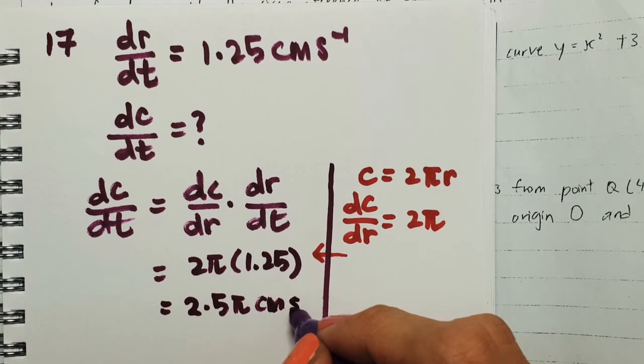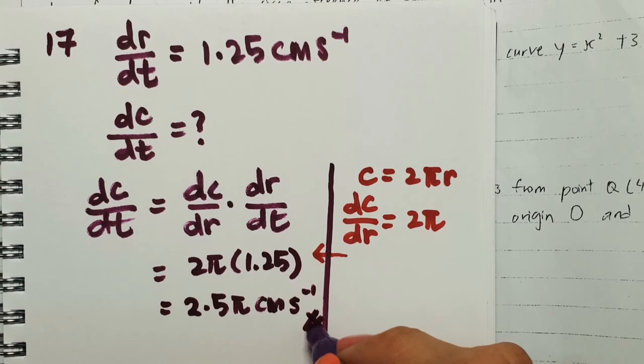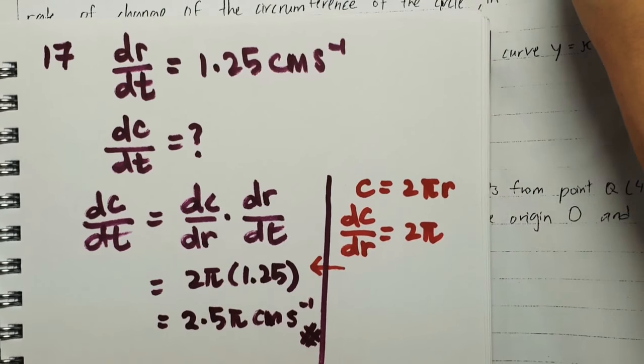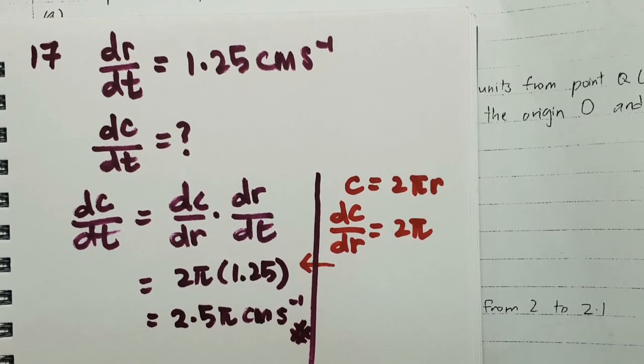Then over time means per second, so this is the unit that we have. That's it, we have found the answer for question 17. That's it on the board, and that is your unit.